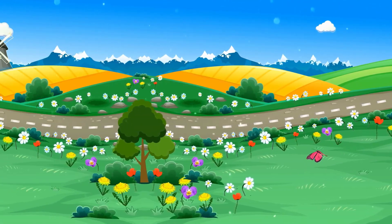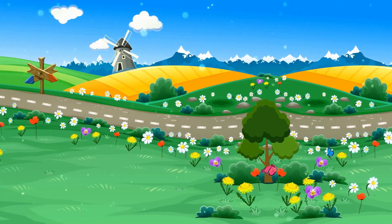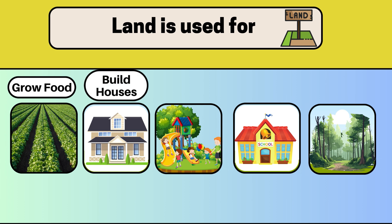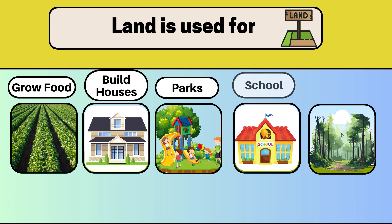Land has many uses, such as in agriculture for growing food. We build houses, parks and schools on it. Also, land is used for forests, roads and setting up industries.